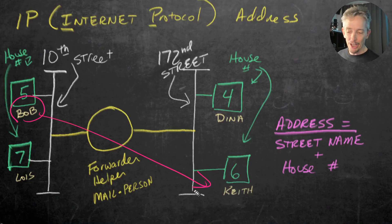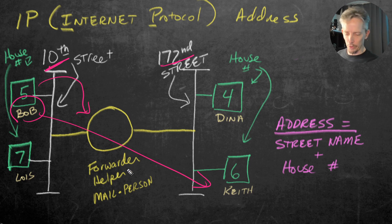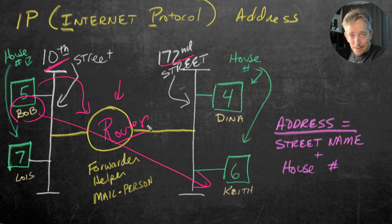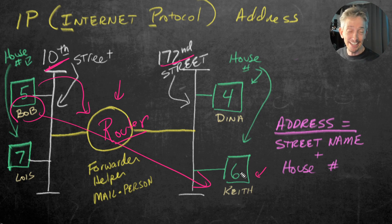One more tidbit: if somebody on street 10 — say Bob — wants to communicate with Keith over on street 172, Bob recognizes he lives on 10th Street and Keith is on 172nd Street, which is a different street. So instead of trying to reach Keith directly, it's going to forward the information to a middleman — a forwarder, a helper. In networking, we call this a router. Routers take packets from one network and forward them to the destination network — in this case, from the 10 network to the 172 network — so it can finally be delivered to Keith at host address six.